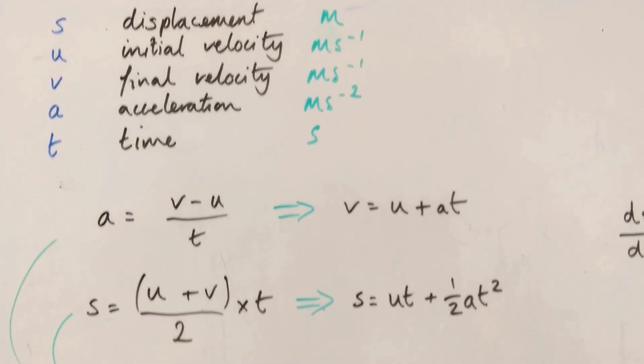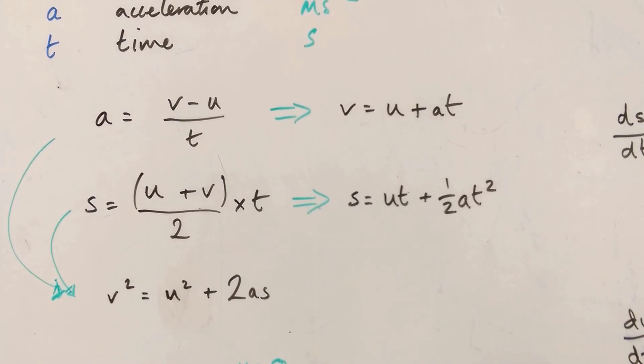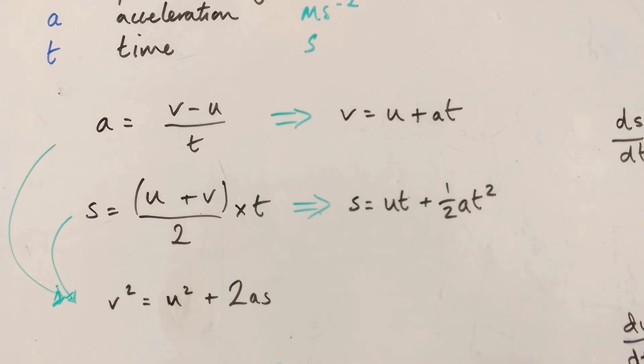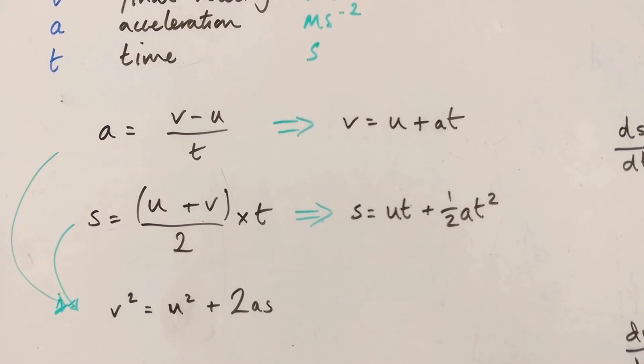Okay, so the first one is a familiar equation, I'm sure to you. It's the equation for acceleration. Acceleration is defined as the rate of change of velocity. So it's the difference between the two, v minus u, divided by time. And that's just rearranged to v is u plus at.